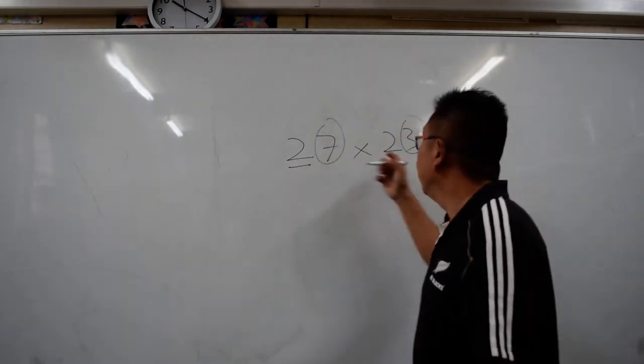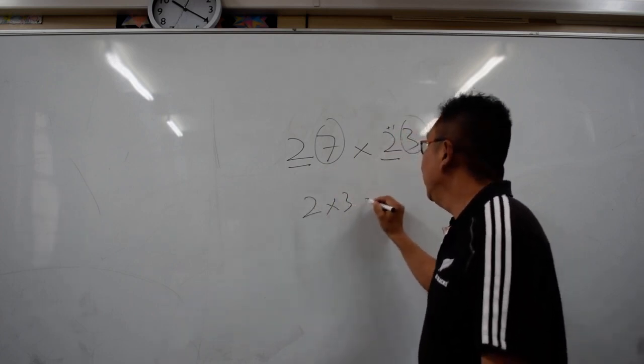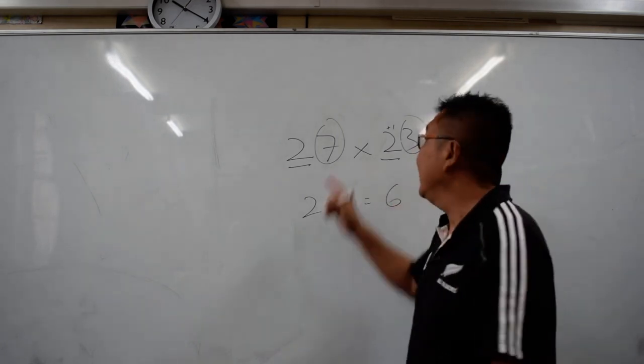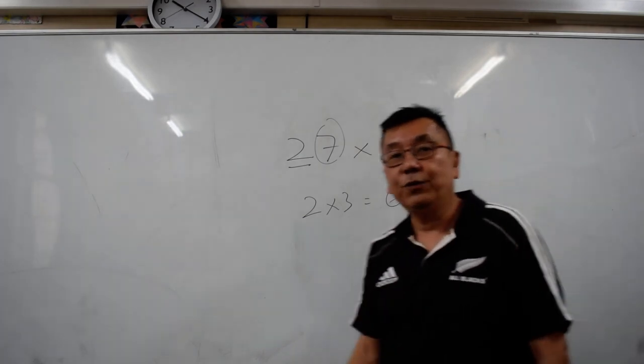So what you do, 2 times 2, instead of 2 times 2, you increase by 1. So 2 times 3, the answer is 6. And then 7 times 3 is 21. So 621.